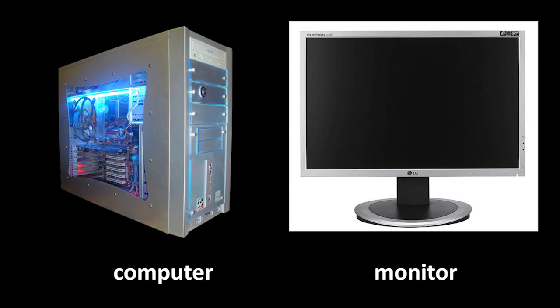It's very common that people fail to distinguish between what's called a monitor and an actual computer. A monitor is simply a display device — it's something which displays an image sent to it through a signal from the computer. Otherwise, a monitor is a dumb device; it's entirely up to the computer to determine what image to display. So try not to call your monitor a computer.